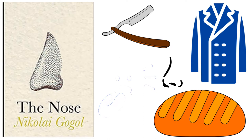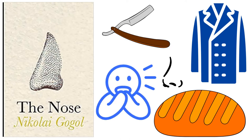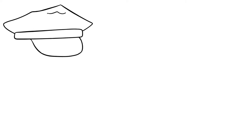He startles himself even more when he recognizes the nose is belonging to a regular customer, a collegiate assessor Kovalev. Praskovia Osipovna instantly threatens to contact the police and accuses her husband of shaving his nose off while intoxicated. Devil knows how that happened.